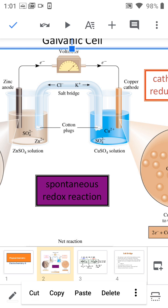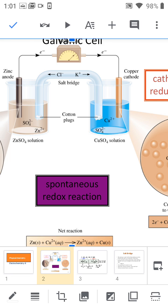See here, the zinc electrode is acting as an anode and the copper electrode is acting as a cathode. And you know that in the anode, oxidation will take place, and in the cathode, reduction will take place.